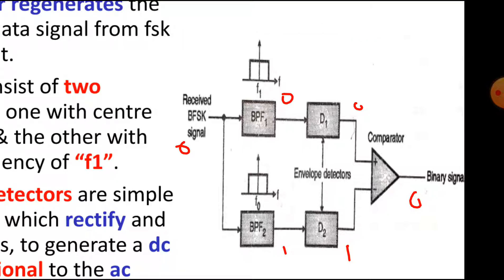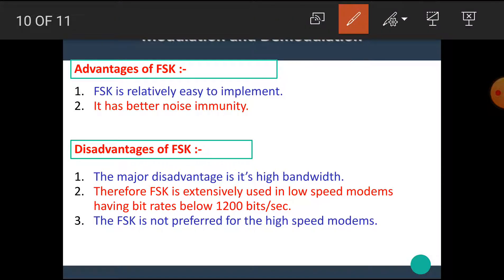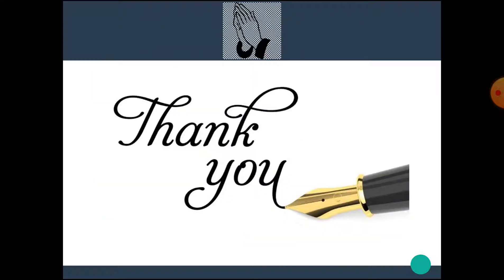Now let's see the advantages of frequency shift keying. FSK is relatively easy to implement and has better noise immunity. A major disadvantage is its high bandwidth. Therefore, frequency shift keying is extensively used in low-speed modems having bit rates below 1200 bits per second, and is not preferred for high-speed modems.